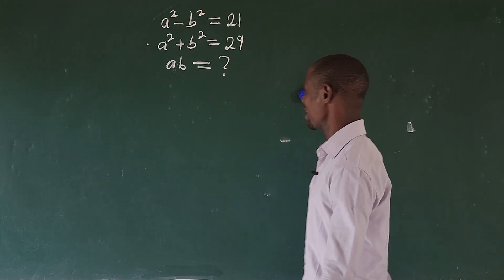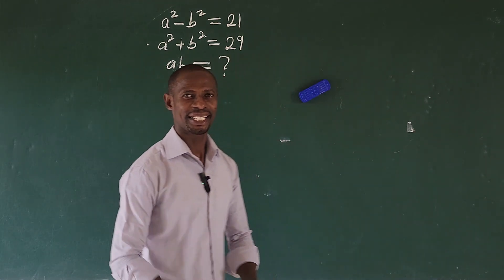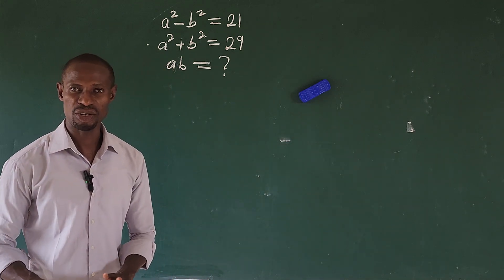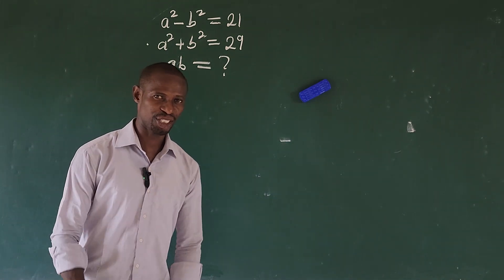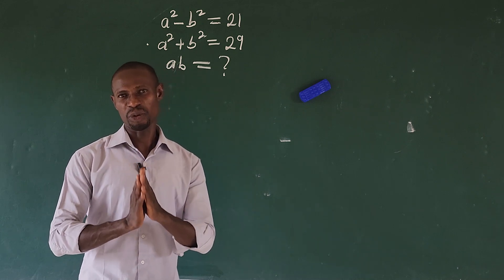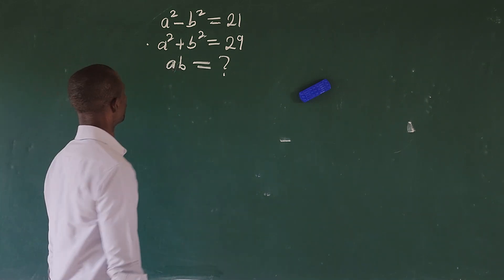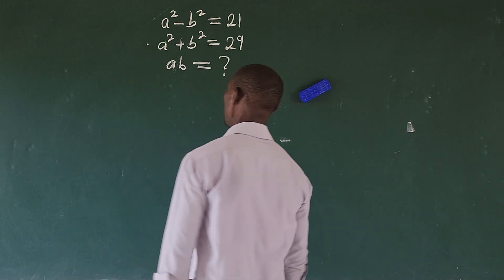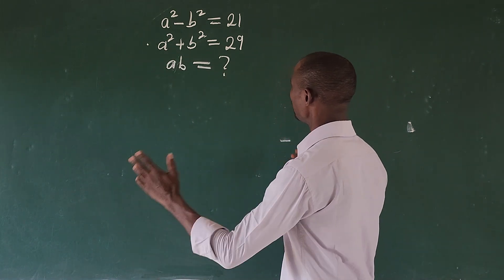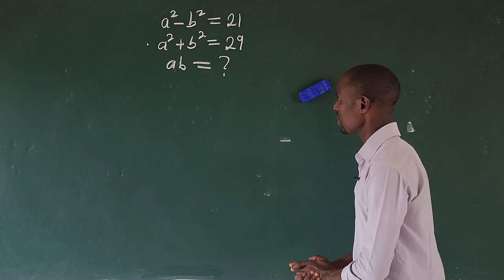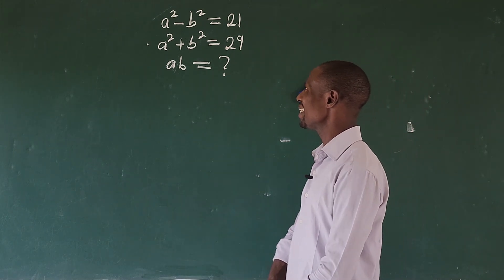Hi, welcome to today's class. We're going to solve this question using the quickest, shortest approach possible so you can beat the examiner's time. The question is: a squared minus b squared equals 21, and a squared plus b squared equals 29. What is the value of a times b?